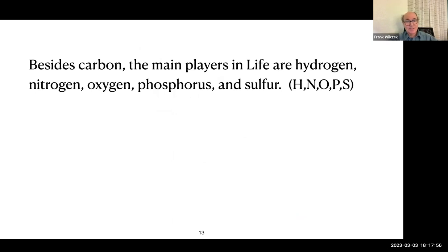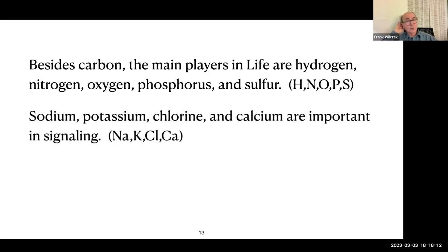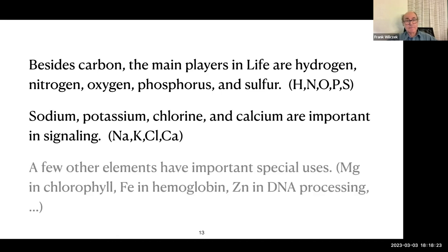So besides carbon, the main players in life are hydrogen, nitrogen, oxygen, phosphorus, and sulfur, basically the elements that are low in the periodic table and common on Earth. Sodium, potassium, chlorine, and calcium are important in signaling, especially in their ionic form. They're used in cellular signaling and nervous signaling. And a few other elements like cobalt in vitamin B12 have important special uses. Especially notable are the magnesium that appears in chlorophyll, iron that appears in hemoglobin that carries oxygen in our blood, zinc that appears in zinc fingers that are important in DNA processing. But these are all niche uses.